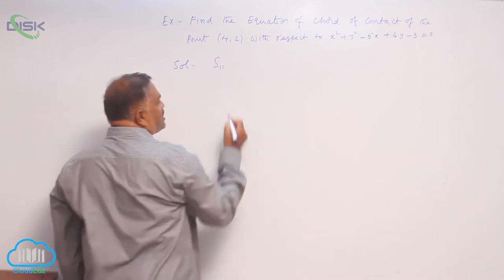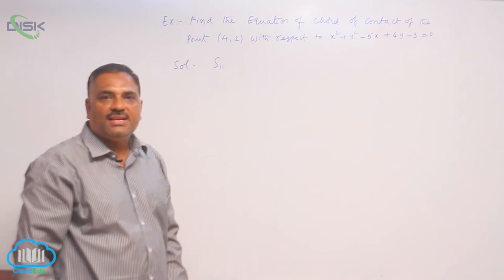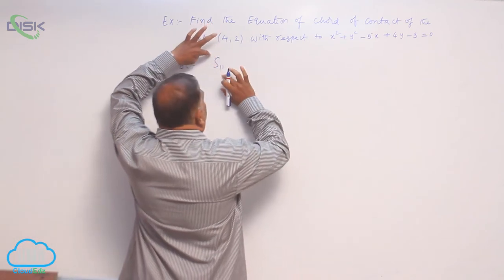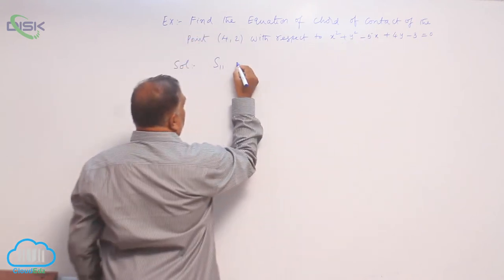So we know that position of the point is decided by S11. Let us substitute and find out S11 value of (4, 2) with respect to the circle.